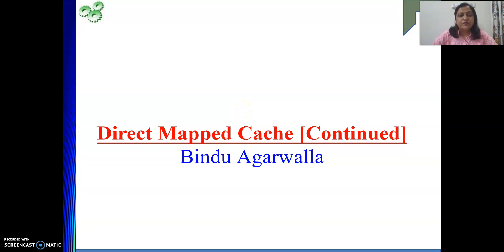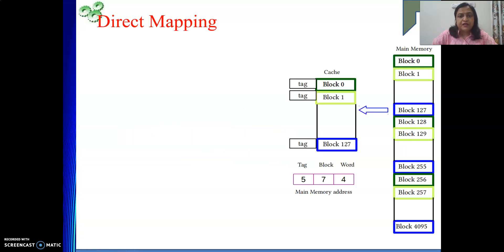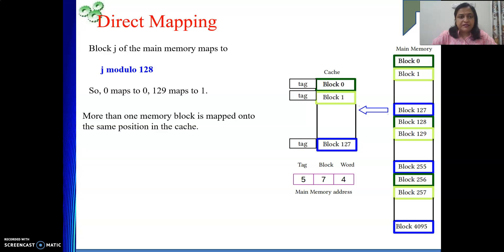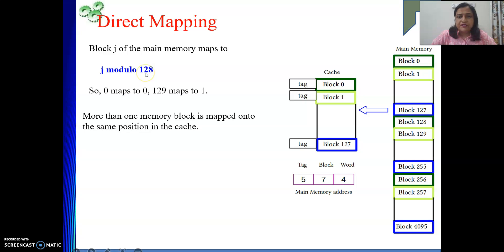Hello friends, welcome to my channel. Here we will continue our discussion on direct mapped cache memory. Last video we concluded that more than one memory block is mapped onto the same position in the cache, as shown in the diagram - block 0, block 128, block 256 - wherever the remainder is 0, the modulo result is 0, will map to block number 0 of the cache.